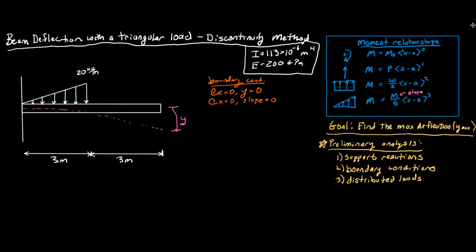Another thing we need to think about is what our support reactions are going to be. We're going to have an Ay, an Ax, and then we're also going to have a moment Ma. We know Ax is going to be equal to zero because there's no x-forces here. So we still need to calculate Ay. We look at this distributed load and can simplify it to find the magnitude.